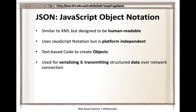JSON is an acronym that stands for JavaScript Object Notation. It is similar to XML and designed to be human readable. It uses JavaScript notation but is platform independent — it doesn't depend on JavaScript and can be used by any programming language. It is text-based code used to create objects and is used for transmitting structured data over the network.